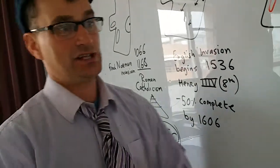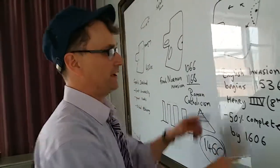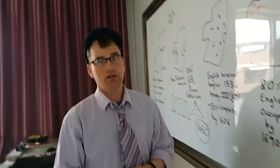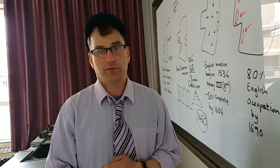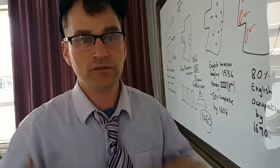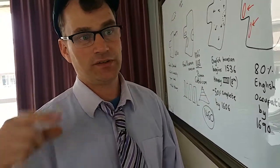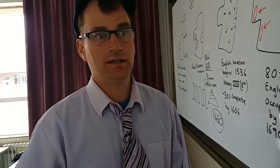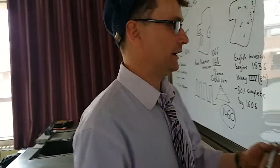Now, the English are hungry for resources and they invade in 1536 under Henry VIII. Why did he invade? Because of money. He wants money. He goes round saying, listen, now you are part of the British Empire, and you swear allegiance to me.